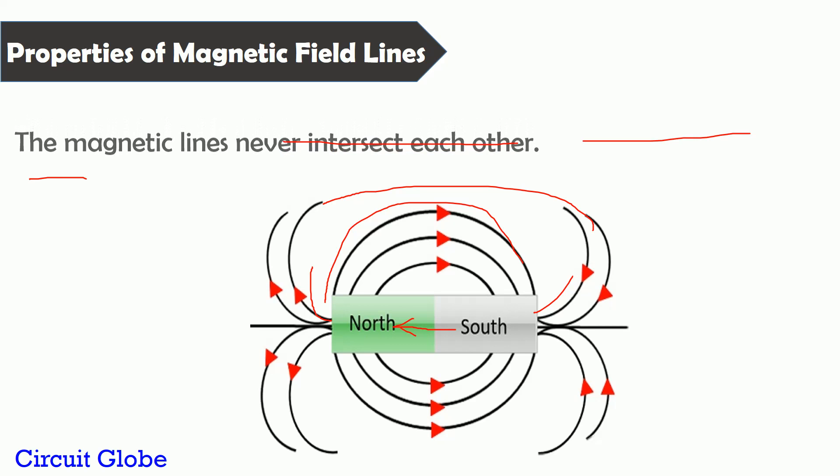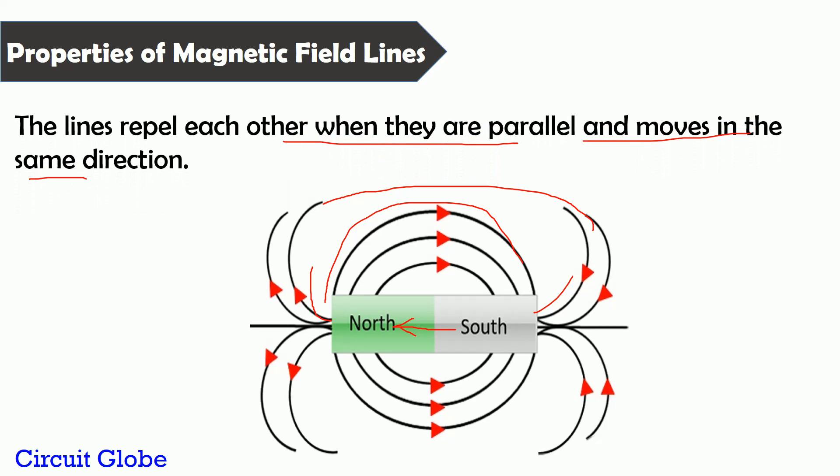The next property of the magnetic field lines is that they always try to repel each other. If two lines are moving in the same direction, they always try to move apart from each other and do not intersect. This is the last property of the magnetic field lines.